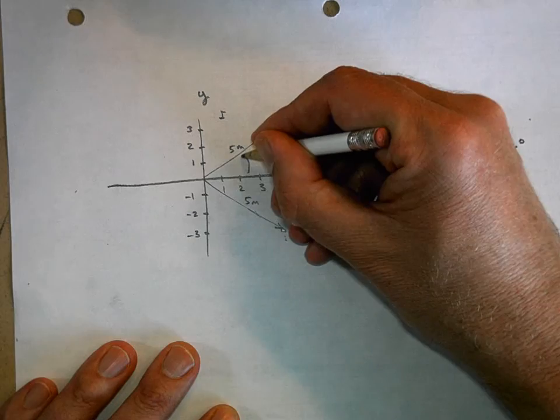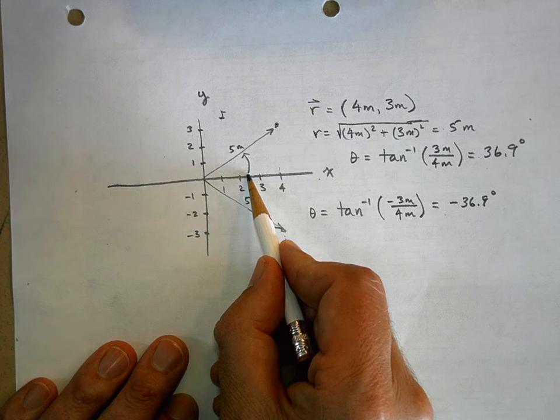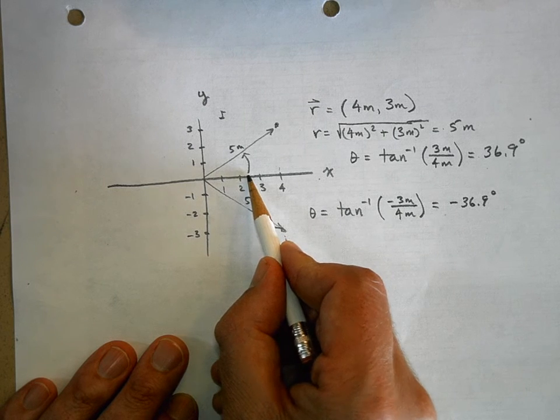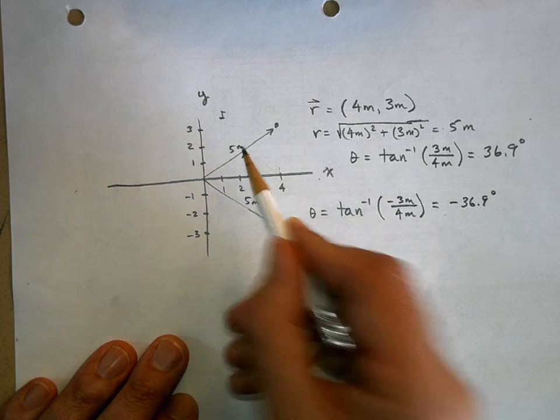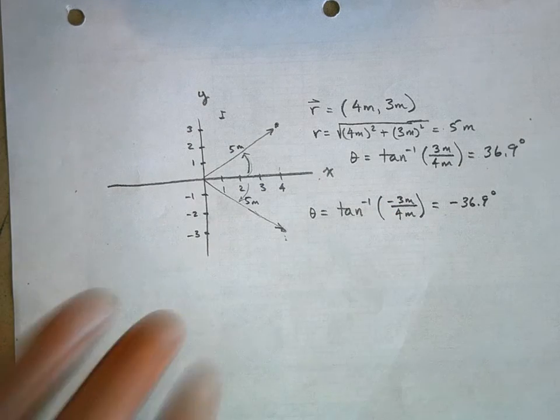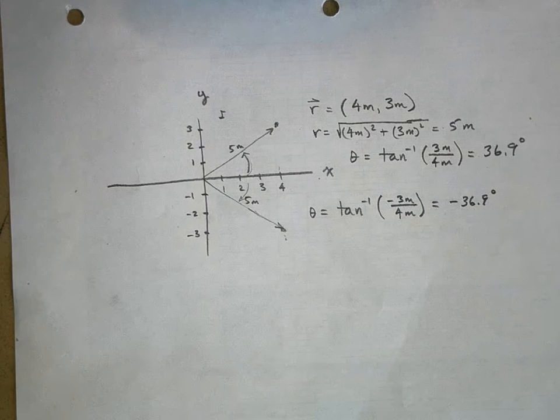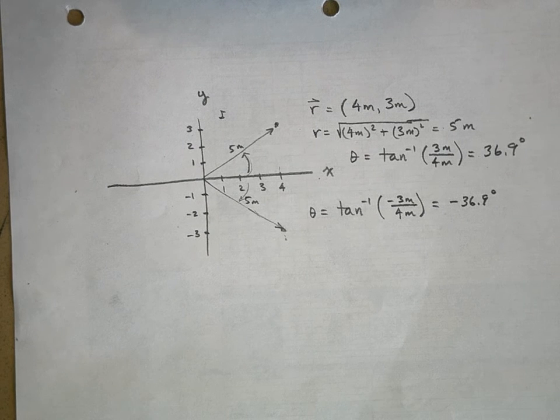this rotates positive, or counterclockwise, we said if we rotate from the x-axis like this, it's a positive angle, but if we rotate down like this, it's a negative angle. And your calculator knows that. The algorithm in your calculator knows that. So it gives you this angle.